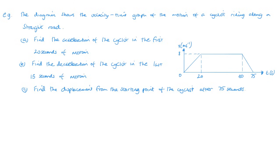So here we have the diagram shows the motion of a cyclist along a straight road. Okay, so here we've got the cyclist.